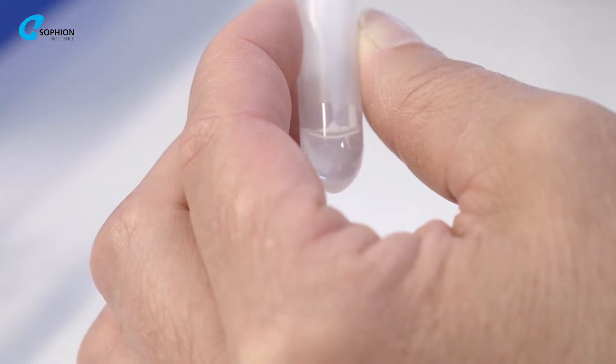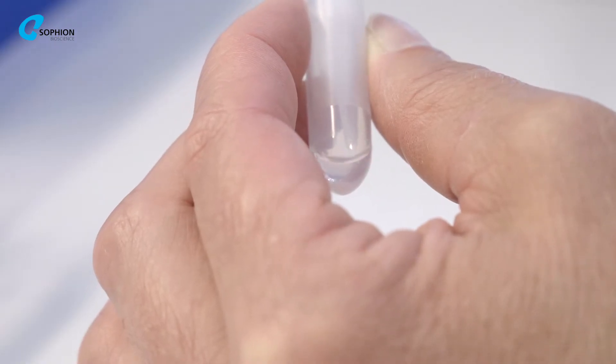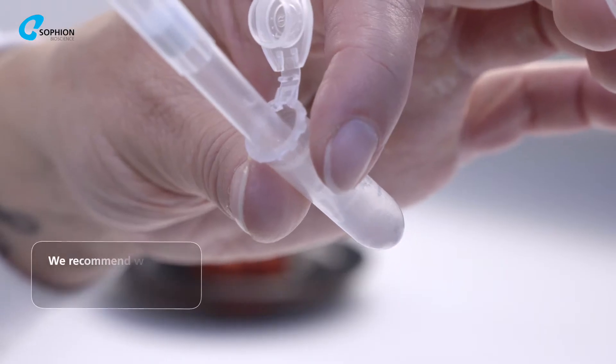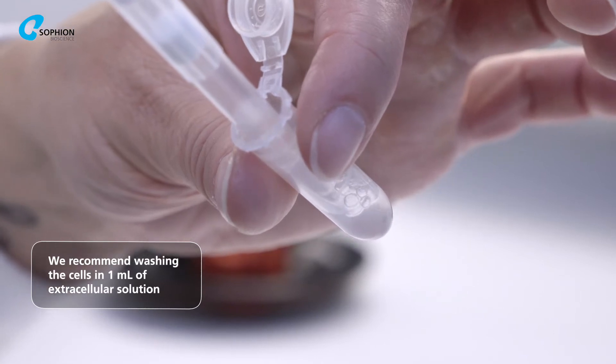You must now aspirate the supernatant and wash the cells in the extracellular buffer solution in which you want to conduct your patch clamp experiment.